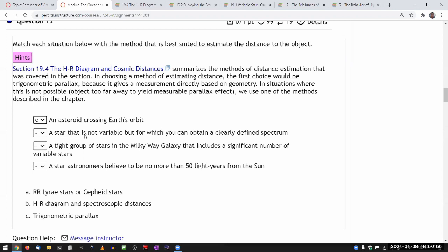And star that is not variable, which means you can't use A, but for which you can obtain a clearly defined spectrum. So, that would be the HR diagram method. That's B.